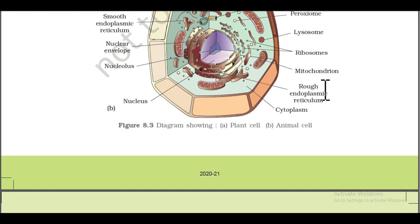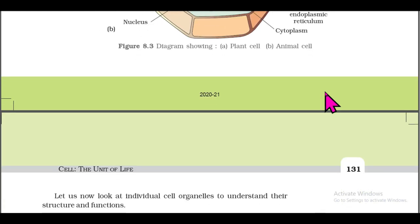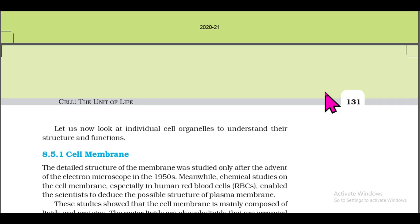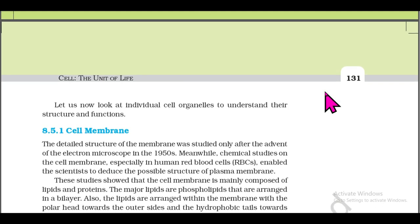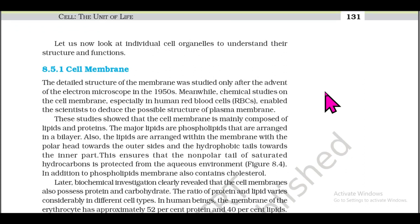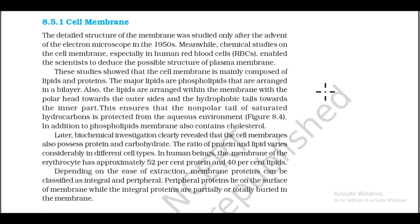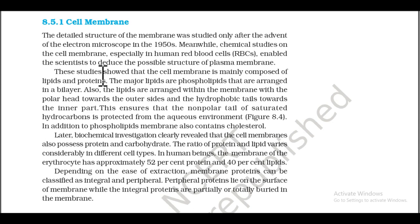Section 8.5.1: Cell Membrane. The detailed structure of the membrane was studied only after the advent of the electron microscope in the 1950s. Chemical studies on the cell membrane, especially in human red blood cells, enabled scientists to deduce the possible structure of the plasma membrane. These studies showed that the cell membrane is mainly composed of lipids and proteins.